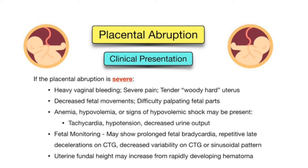Maternal complications include disseminated intravascular coagulation (DIC), which is actually the most common cause of DIC in pregnancy, occurring in 20 percent of placental abruption patients. Other maternal complications include shock due to fluid loss, and anemia from blood loss, which increases the risk of mortality.